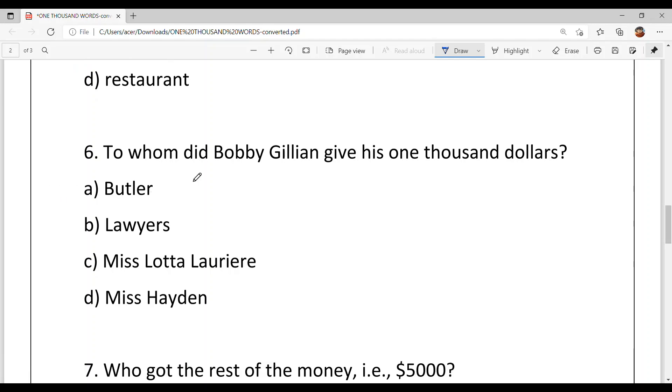Sixth, to whom did Bobby Gillian give his $1,000? Option A, butler. Option B, lawyers. Option C, Miss Lotta Lauriere. Option D, Miss Hayden. Answer is option D, Miss Hayden. Because she was his cousin and he also liked her a lot.